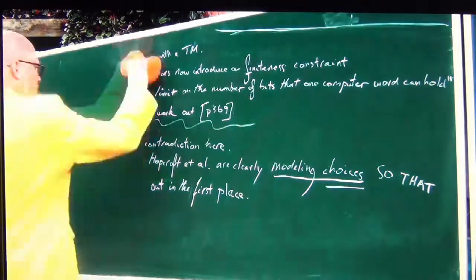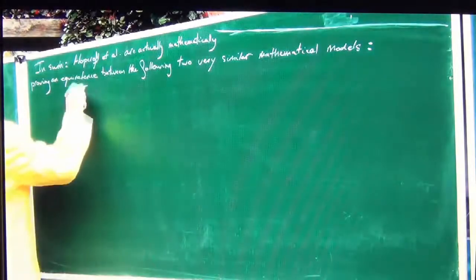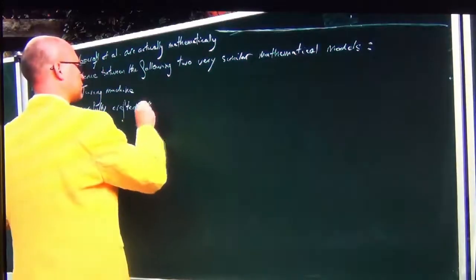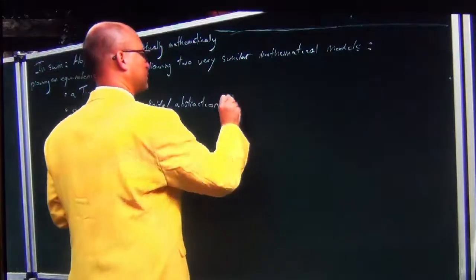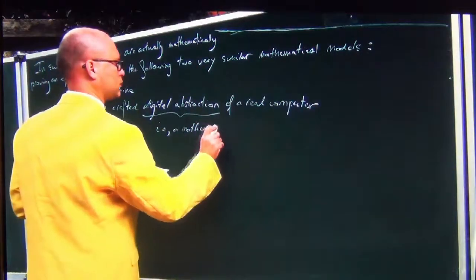In sum, Hopcroft et al. are actually mathematically proving an equivalence between two very similar mathematical models: a Turing machine on the one hand, and a carefully crafted digital abstraction of a real computer on the other. So that too is a mathematical model.